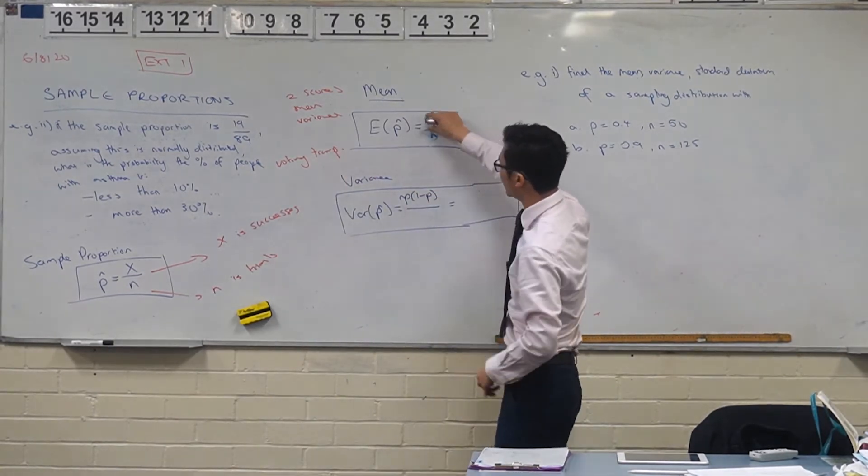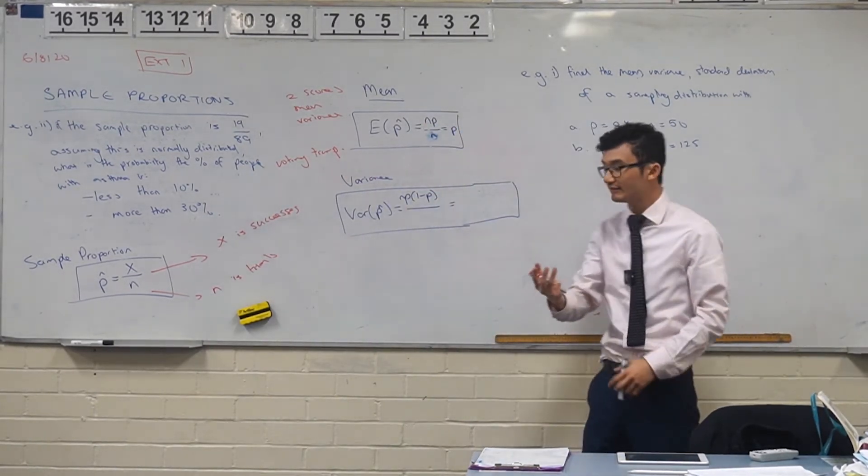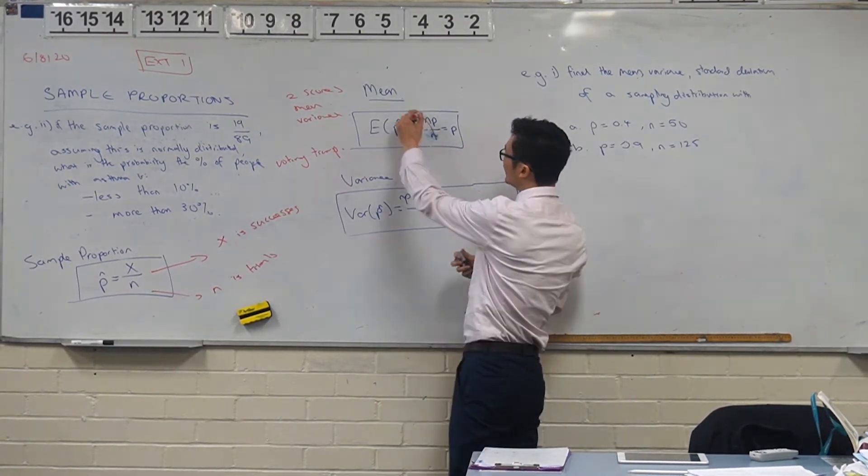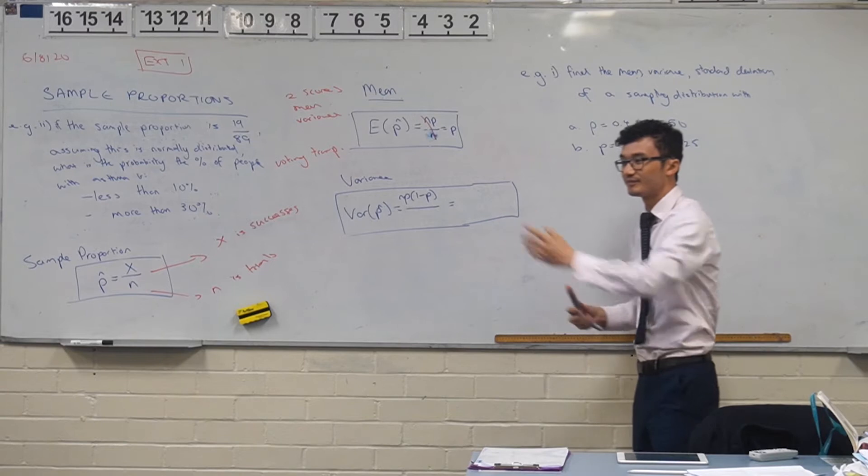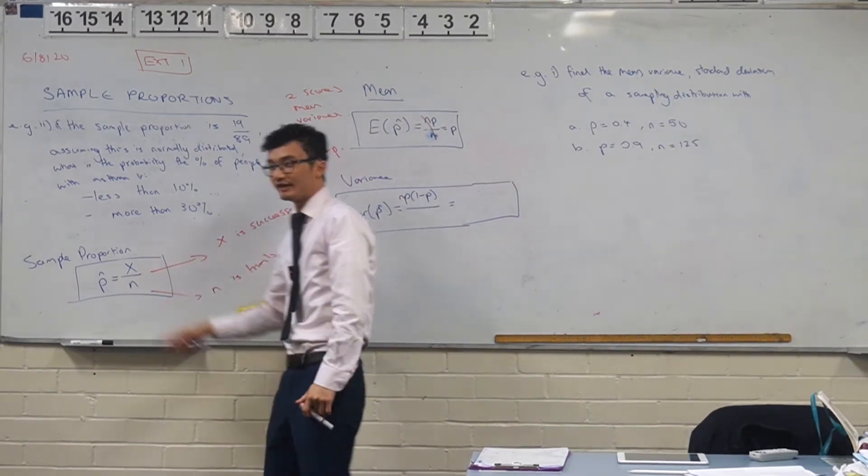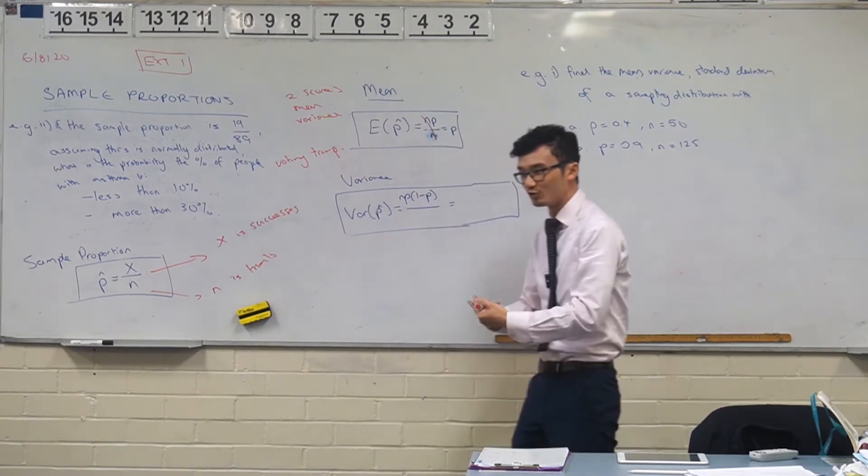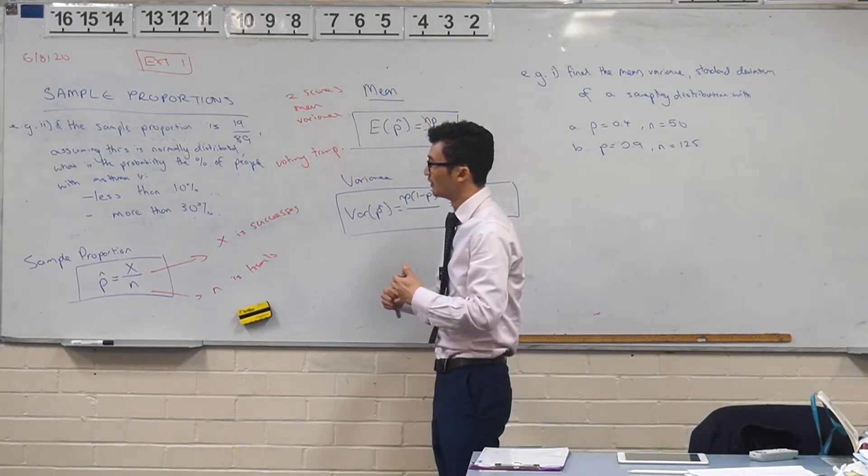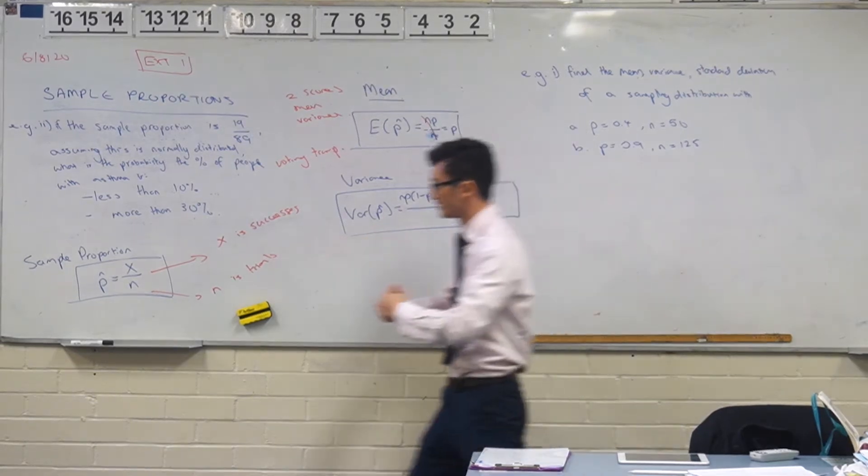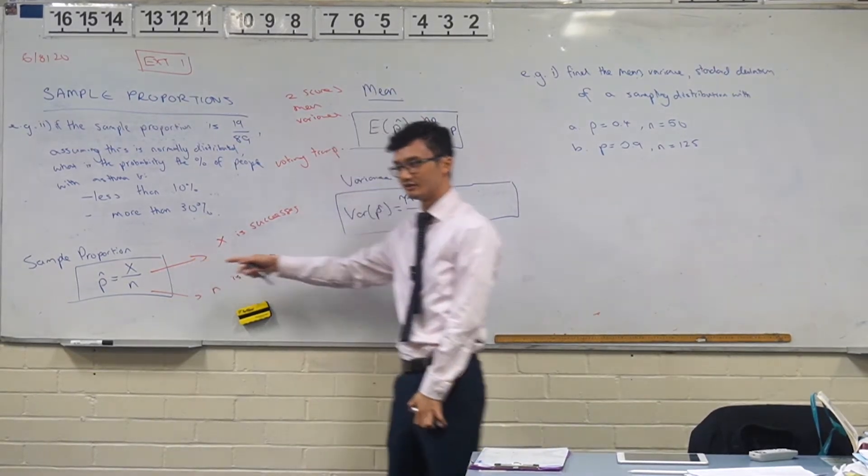So all I've done here is I've taken np, which is our typical mean, and I've divided that by n, but you notice that it actually divides through anyway, so it just ends up being p. Because just like how we divide the successes here by n, because we're taking that as a sample, we're just dividing through by how many samples we took. So it's just like a proportion. The idea is like it's like a percentage. Does that kind of make sense?